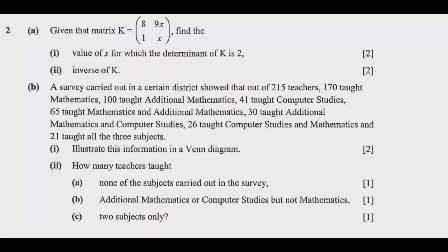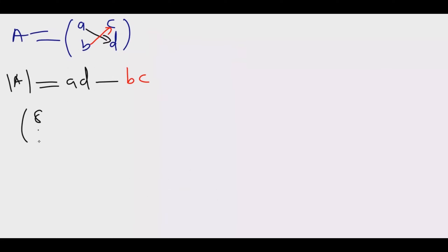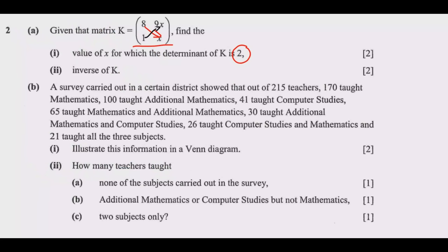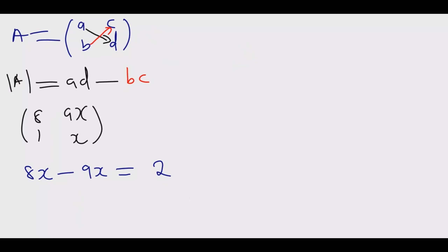Now let us look at the matrix we are given. For matrix K with columns [8, 1] and [9X, X], the determinant is 8 times X minus 1 times 9X, and we equate that to 2. So we have 8X minus 9X, which gives us negative X, equal to 2.